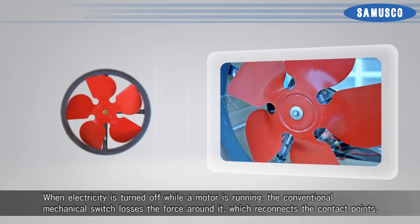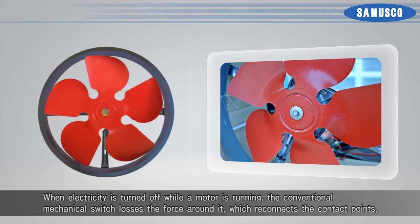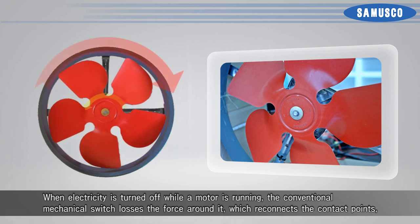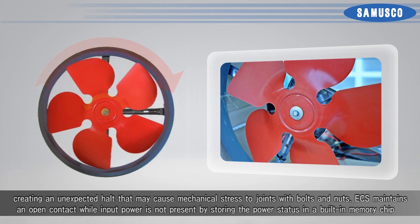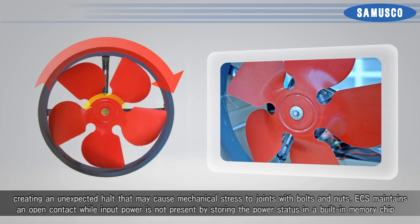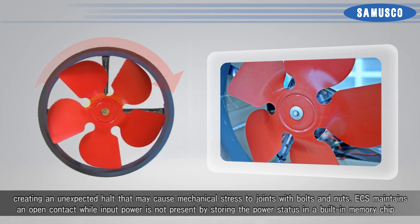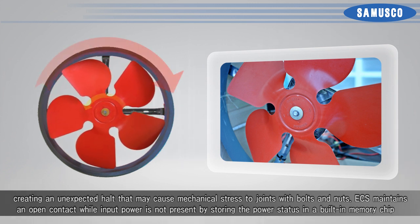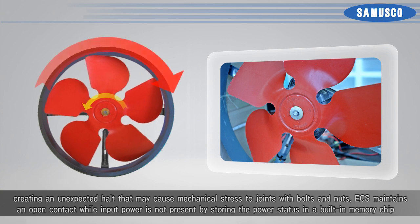When electricity is turned off while a motor is running, the conventional mechanical switch loses the force around it, which reconnects the contact points, creating an unexpected halt that may cause mechanical stress to joints with bolts and nuts. ECS maintains an open contact while input power is not present by storing the power status in a built-in memory chip.